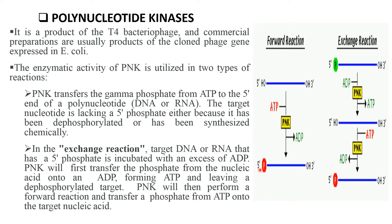The target nucleotide lacks the 5' phosphate either because it has been dephosphorylated or was synthesized chemically. In the exchange reaction, the target DNA or RNA that has a 5' phosphate is incubated with excess ADP. PNK will first transfer the phosphate from the nucleic acid onto the ADP, forming ATP and leaving the dephosphorylated target. PNK will then perform the forward reaction and transfer the phosphate from ATP onto the target nucleic acid.